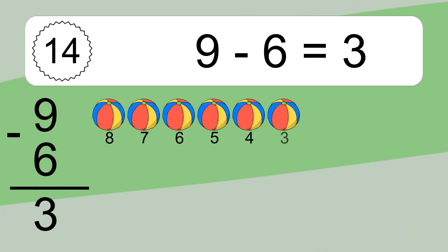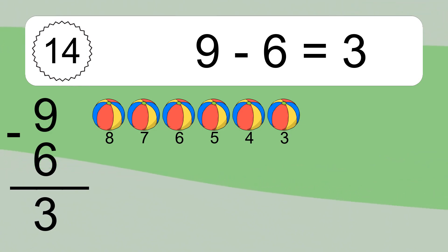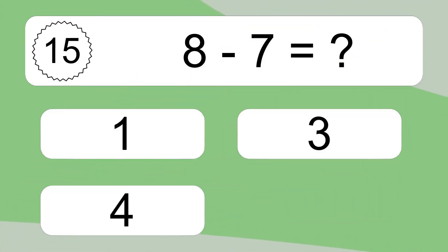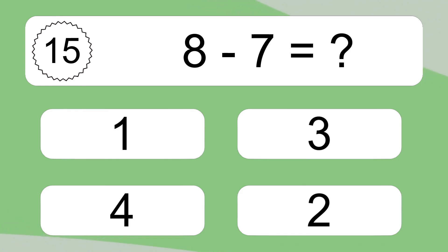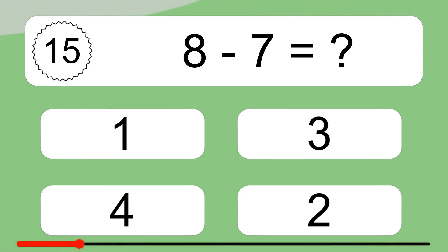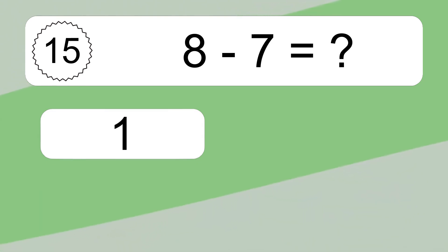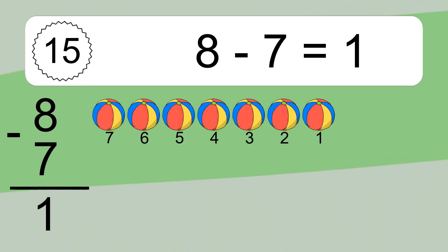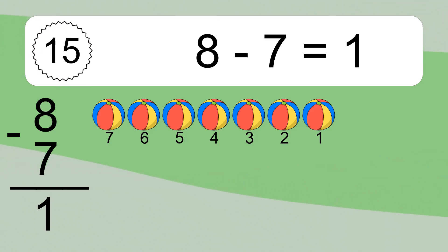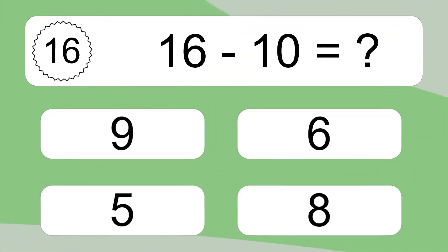9 minus 6 equals 3. Let's count it. 8, 7, 6, 5, 4, 3. Let's count it. 8, 7, 6, 5, 4, 3, 2, 1. 16 minus 10 equals what?